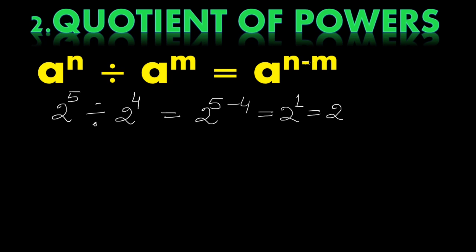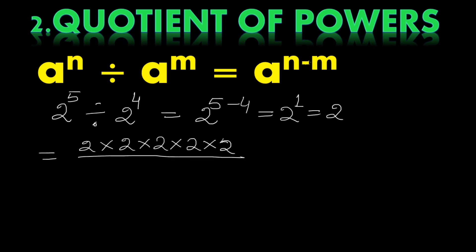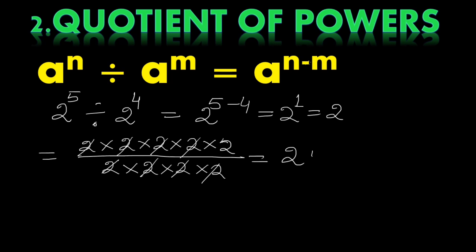But why? Let us verify. 2 raised to the power 5 means 2 is multiplied 5 times, divided by 2 raised to the power 4, meaning 2 is multiplied 4 times. Four of the 2s cancel out and only one 2 remains. By using the laws of exponents, we are getting it in a simpler way.